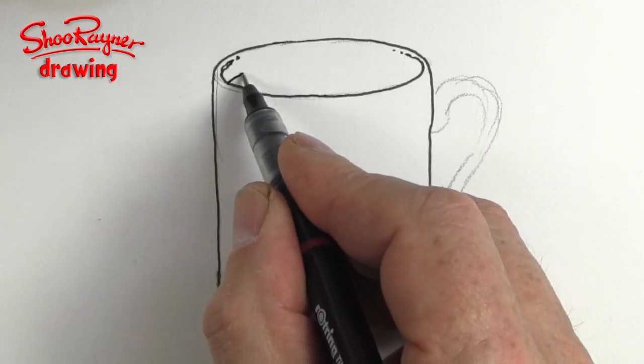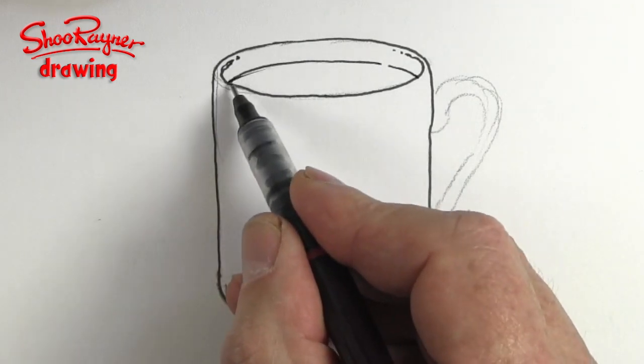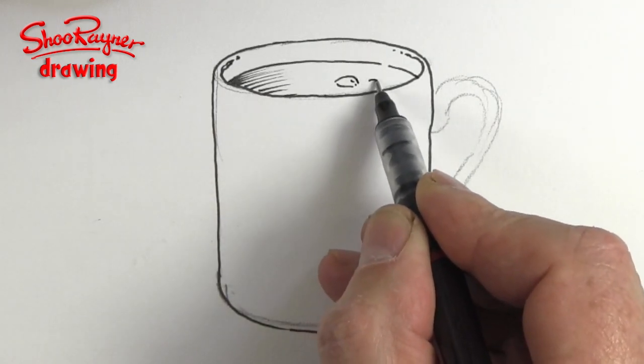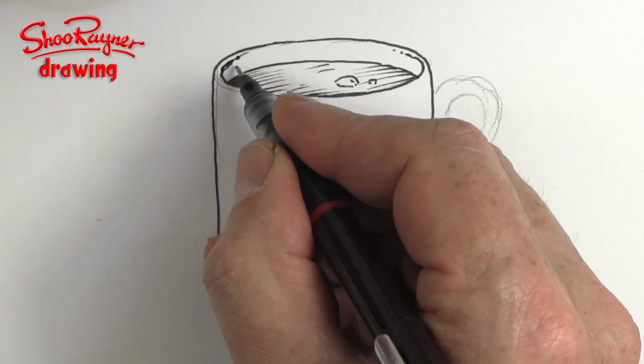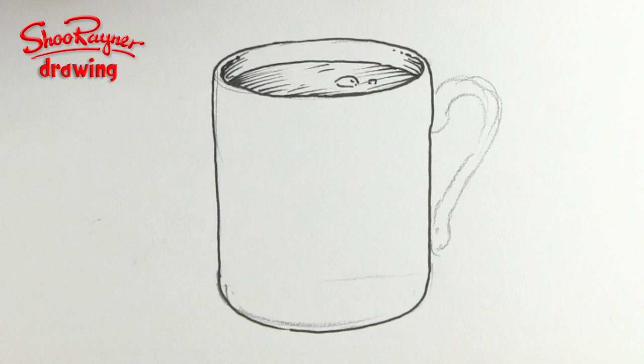The paper just crinkled up on me there. And then we need the coffee inside. Might be a couple of bubbles on it. And then we might want some little bits of shading just curling in there.